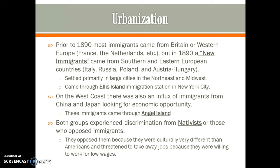By about 1890, new immigrants were mainly coming from Southern and Eastern Europe — Italy, Russia, Poland, Austria-Hungary, and Germany. They settled primarily in large cities in the Northeast and the Midwest. The Germans mainly traveled to the Midwest to become farmers. They came through Ellis Island, which is an immigration station in New York City.